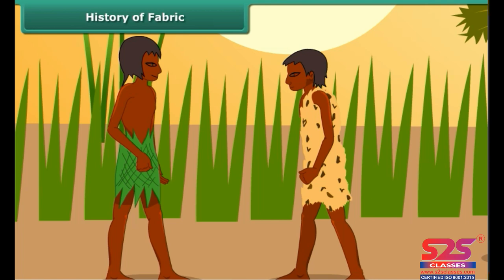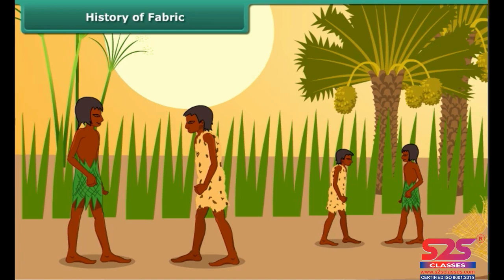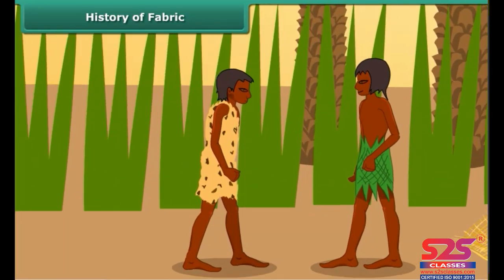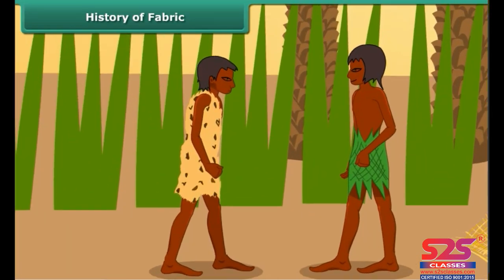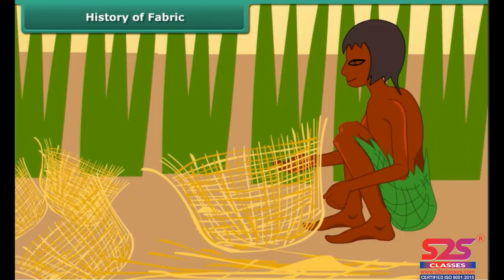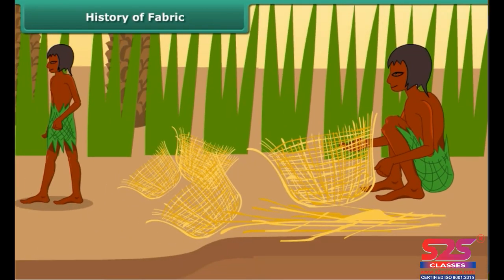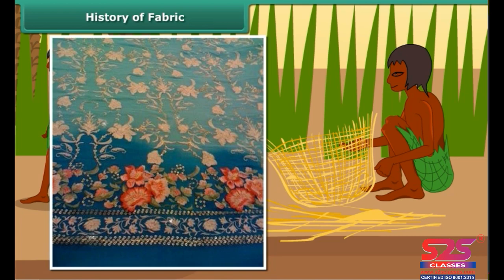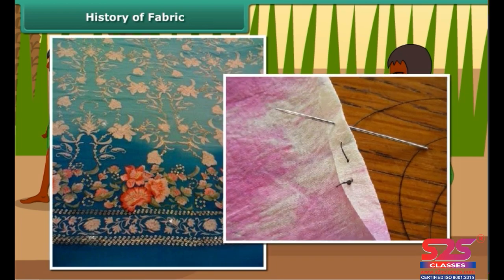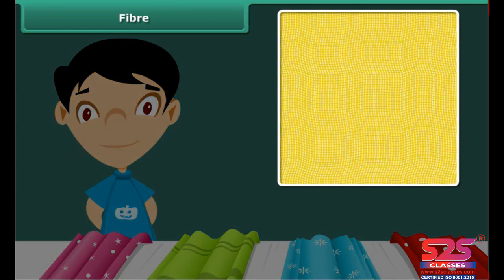Have you ever wondered what materials people used in ancient times for clothing? They used the bark and leaves of trees, animal skins and fur to cover themselves. Slowly, with growing civilization, they learned to weave twigs and grass into mats and baskets. Stitched fabrics came much later with the invention of needles.